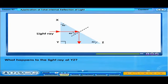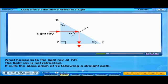What happens to the light ray at YZ? The light ray is not refracted. It exits the glass prism at YZ following a straight path.